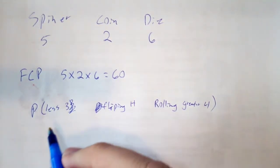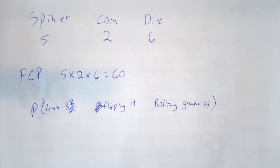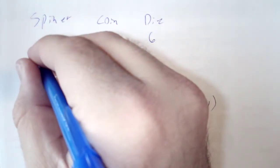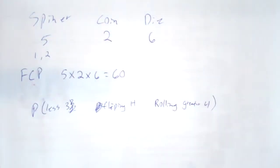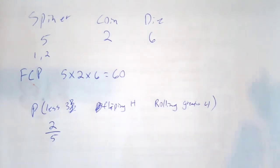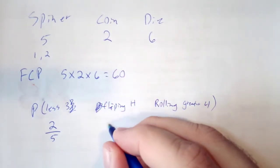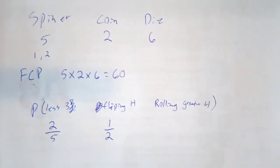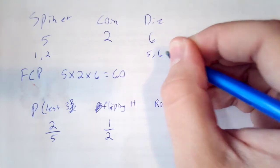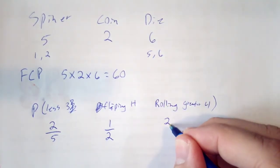Now I need to take less than 3. I have the favorable outcomes for that would be a 1 and a 2 would be less than 3. That is 2 out of 5. Flipping the heads is 1 half. And rolling greater than 4, that would give me a 5 and a 6. So that's 2 out of 6.